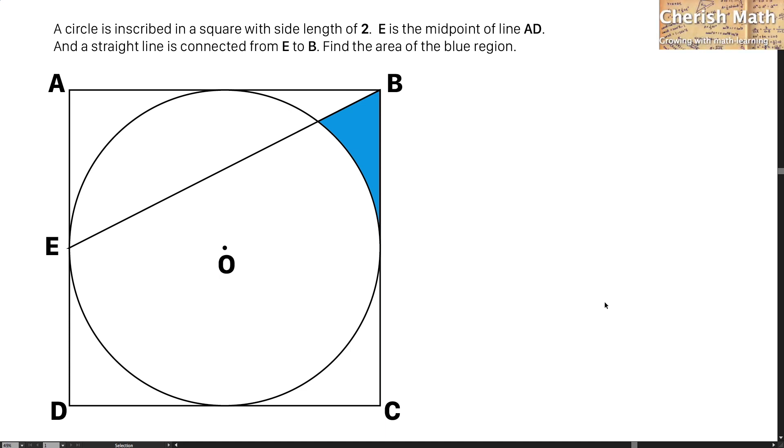Say hi from Cherish Math, and this is the problem. A circle is inscribed in a square with side length of 2. E is the midpoint of line AD, and a straight line is connected from E to B. Find the area of the blue region.